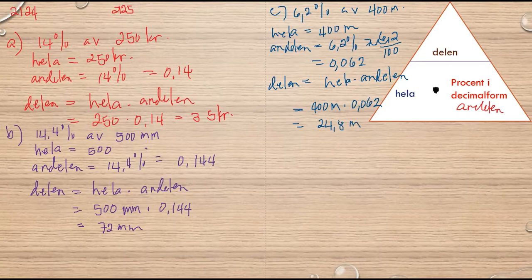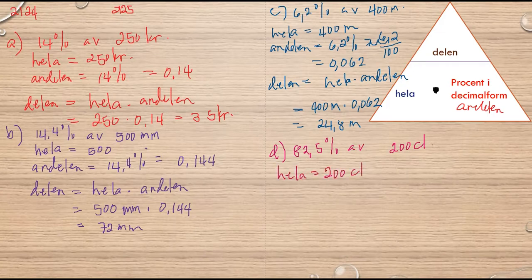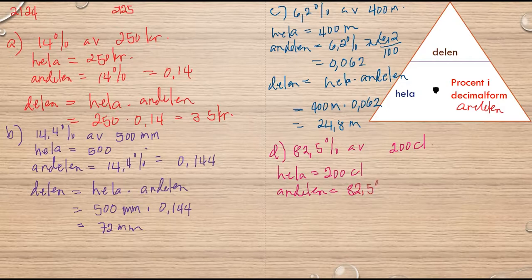Sen tar vi den sista, D. 82.5% av 200 centiliter. Så hela är 200 centiliter. Andelen är 82.5% motsvarar 0.825.